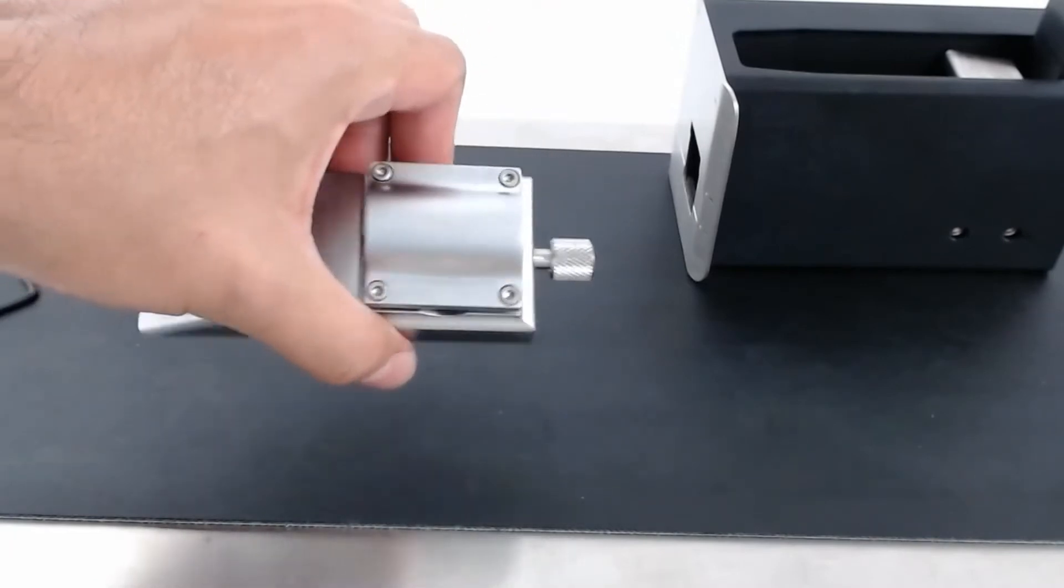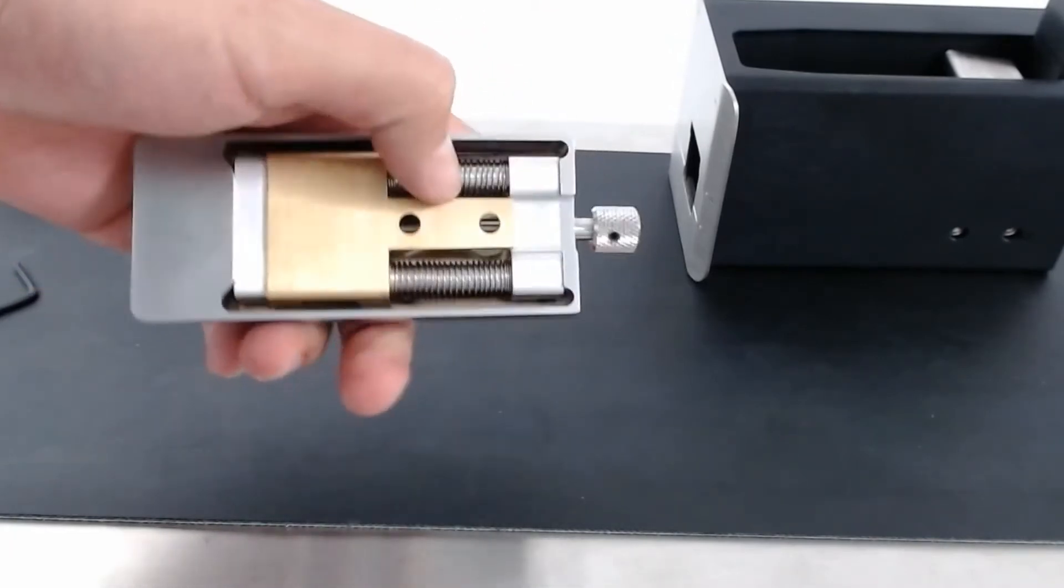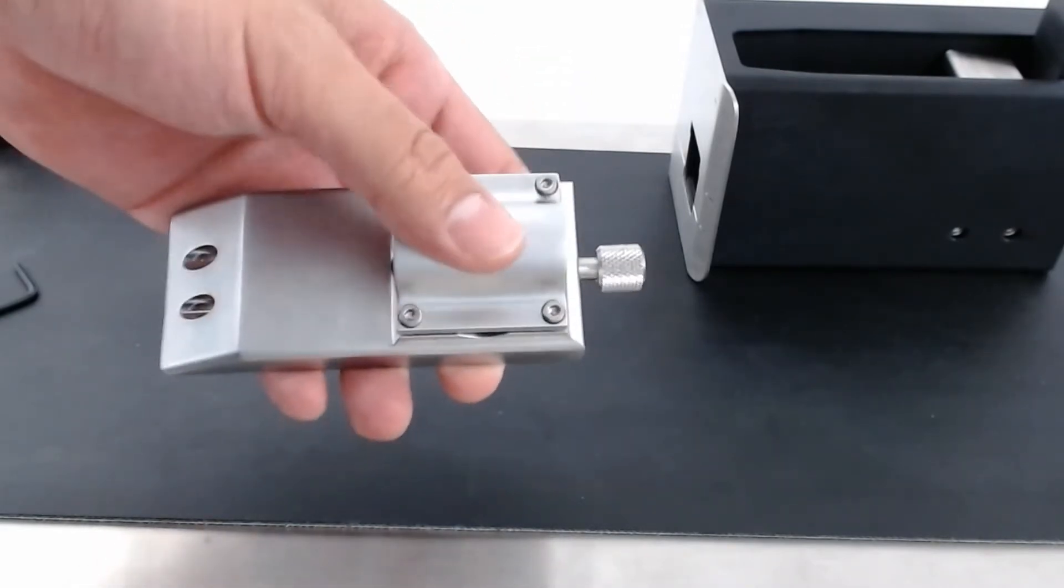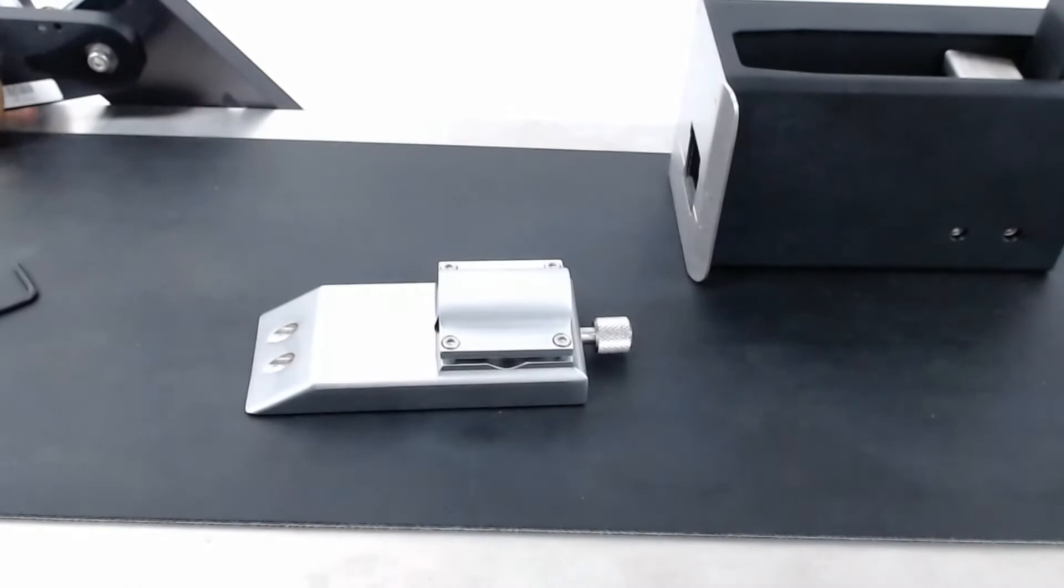This is called a fine-tuning module and so this will allow you to adjust the printhead just millimeters at a time in order to get it exactly where you need. I'll show you how to do this.